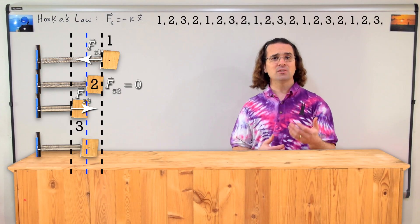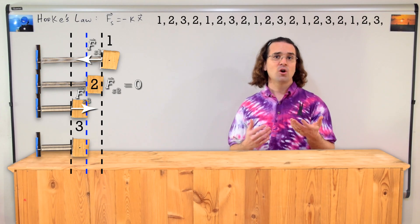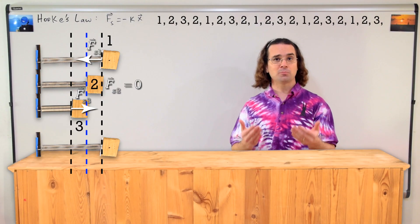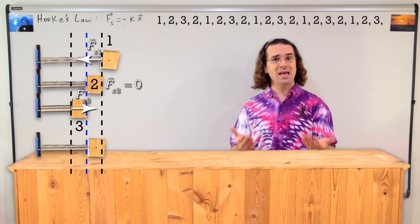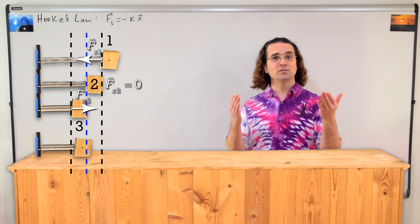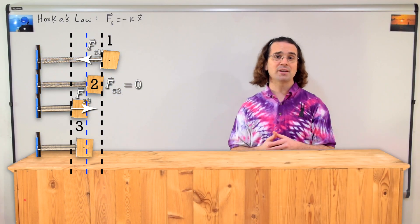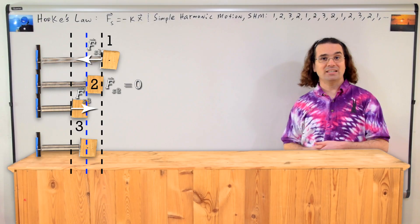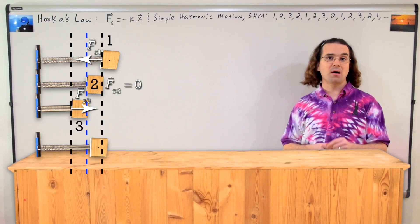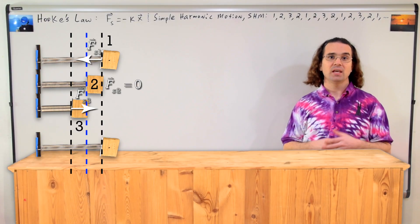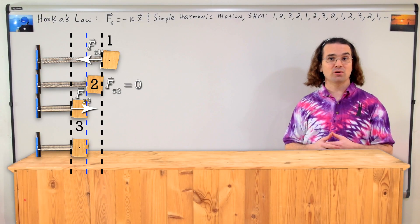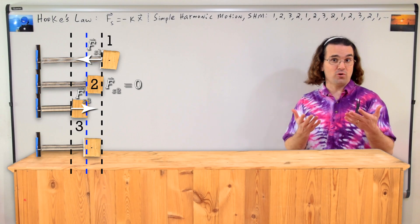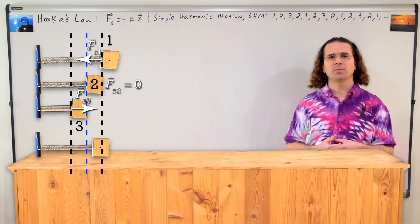Kevin, in the absence of friction, when will the pattern of this mass-spring system end? If there's no friction, it will never end. Correct. This is called simple harmonic motion. This mass-spring system is in simple harmonic motion — it will continue to oscillate back and forth like this forever in the absence of friction.